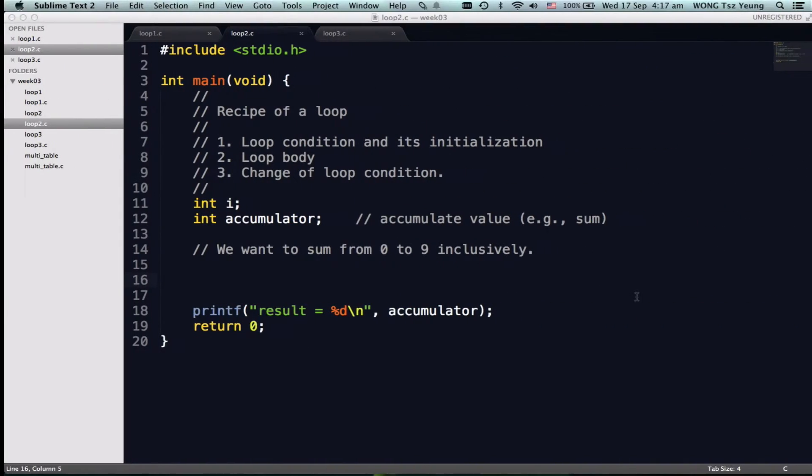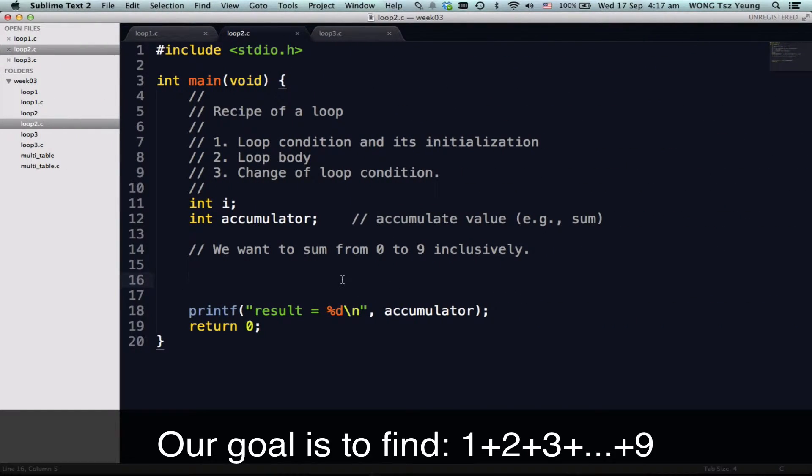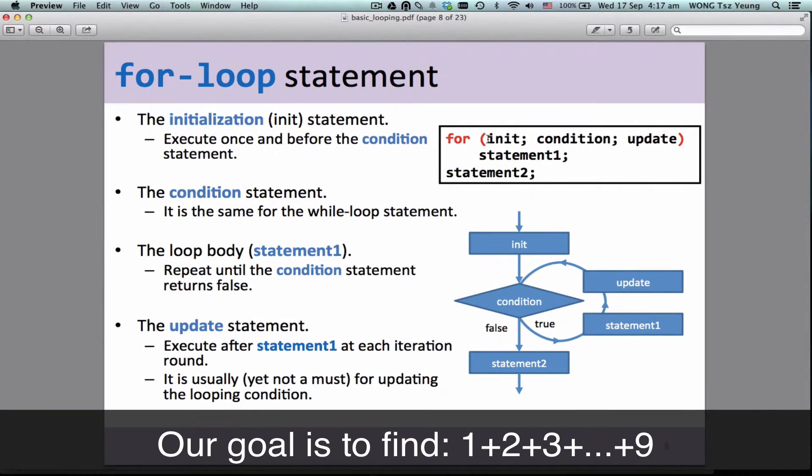So let's write code using for loop. Again, I will repeat one of our examples to sum from 0 to 9 inclusively. How to write a for loop for it? Remember, the for loop will comprise the initialization, the condition itself, as well as the update, together in one looping syntax.